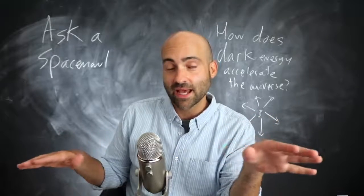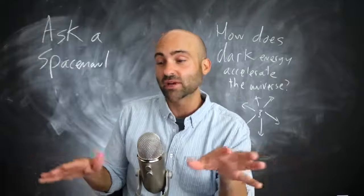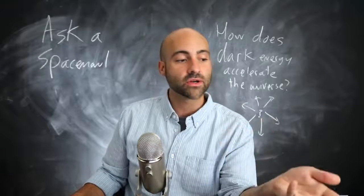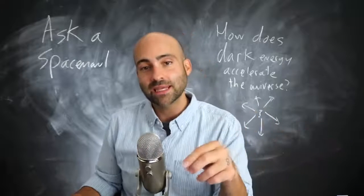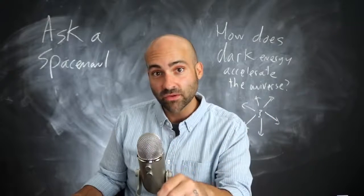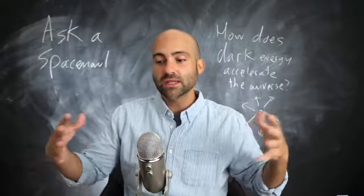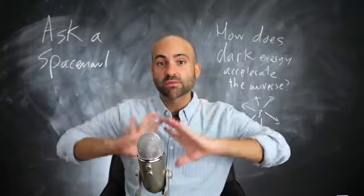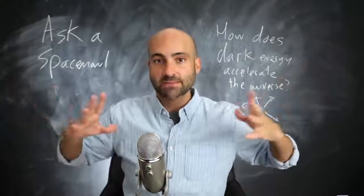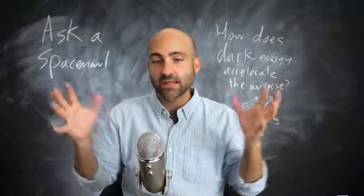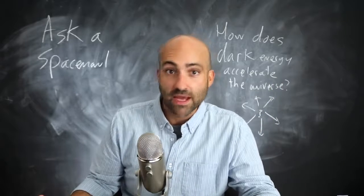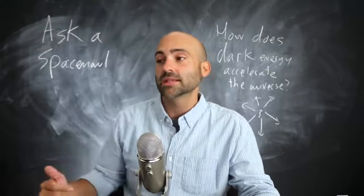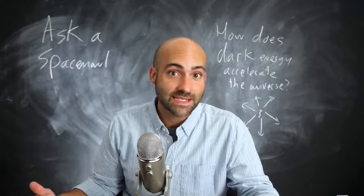So Einstein had to add back in this term — remember, the cosmological constant is allowed to have whatever value is determined by observations. Einstein looked at the current observations of the universe and put in the right value for the cosmological constant to bring the universe back into a static situation. Then a few years later, Edwin Hubble discovered that other galaxies are a thing and that the expansion of the universe is a thing.